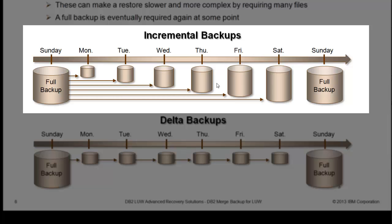A restore of incremental backups is always two steps: the full backup and then whatever incremental backup you want to restore to. So for example, on Friday, you restore the full backup along with the Friday incremental backup to get to your restore point, and then roll forward in the logs from there.